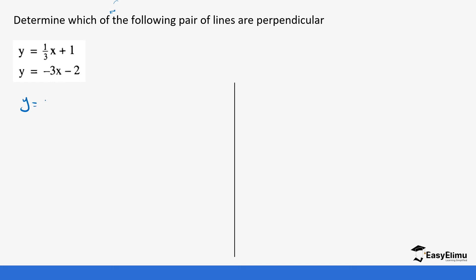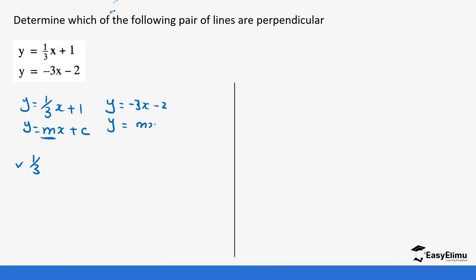The first equation is y equals one-third x plus one. This is in the form y equals mx plus c, so the gradient m of the first line is one-third. The second line is y equals negative 3x minus 2, so m is negative 3. Multiplying the two gradients: one-third times negative 3 gives negative 3 divided by 3, which equals negative one. This tells us that these two lines are actually perpendicular.